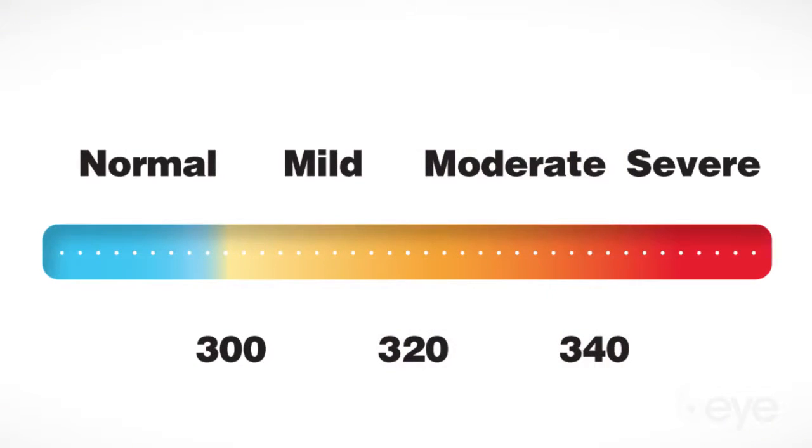Some patients are asymptomatic, so it's very important to order this test if you see any type of lid margin disease or staining, for a future visit. Tear osmolarity at 300 and below is considered normal. The higher the number over 300, the more severe the ocular surface disease. Moreover, if there's a discrepancy or interocular difference of eight milliosmoles or more between the two eyes, that also reflects tear film instability.